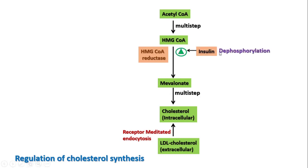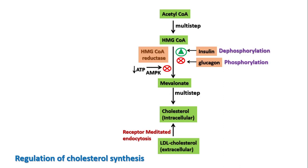In the short-term regulation: insulin causes dephosphorylation of HMG-CoA reductase, activating the enzyme, and thus increases cholesterol synthesis. Glucagon causes phosphorylation of HMG-CoA reductase, inhibiting the enzyme, and decreases cholesterol synthesis. This phosphorylation and dephosphorylation occurs via AMP-dependent protein kinase, which senses increased AMP concentration indicating low ATP. When ATP drops, AMP kinase is activated, phosphorylates and inactivates HMG-CoA reductase, and inhibits cholesterol synthesis.